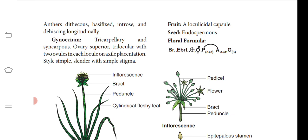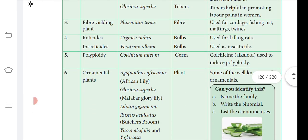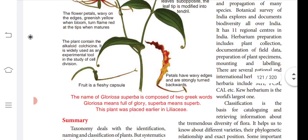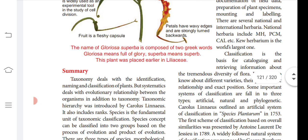The gynoecium is tricarpellary — three carpels fused — hence syncarpous. Ovary is superior, trilocular, with two ovules on each side of the locule. Style is simple and slender, and the stigma is also simple. The fruit is a loculicidal capsule and is endospermous. The floral formula: bracteate, bracteolate, actinomorphic, bisexual; perianth 3+3, androecium 3+3 free attached with the petal, gynoecium 3 fused, ovary superior.